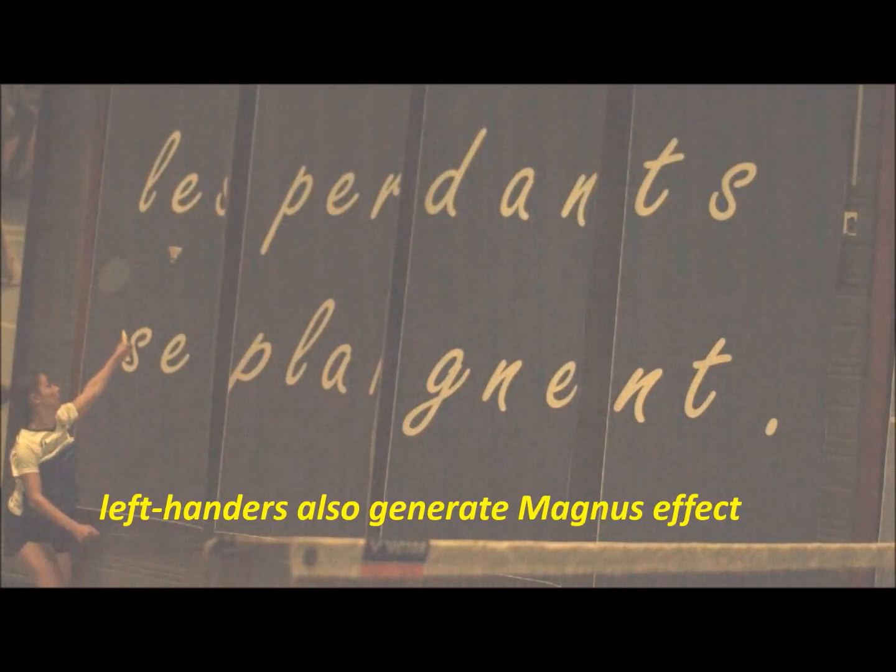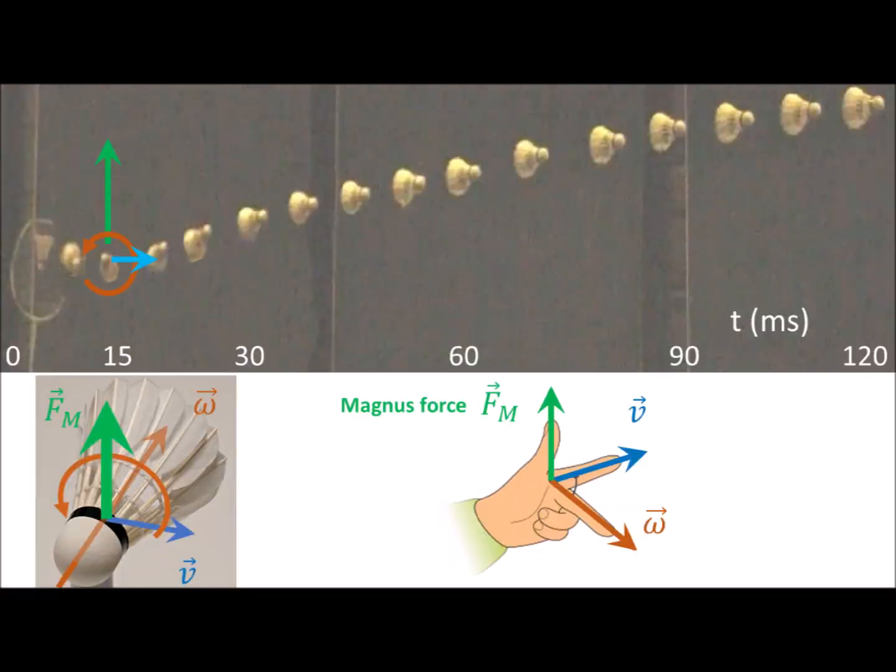Left-handers generate an opposite spinning with slice shot, but given the relative orientation of spinning axis and velocity, this also translates into a Magnus force, lifting up the shuttlecock.